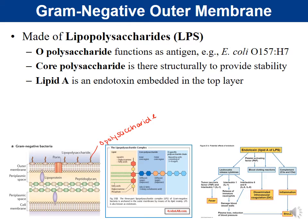For example, E. coli O157:H7 — the H7 is for the flagellar antigen, and the O157 is for the antigen found on the LPS in the outer membrane. These antigens are useful for identifying a particular type of bacteria.